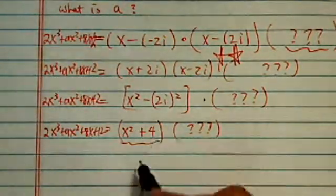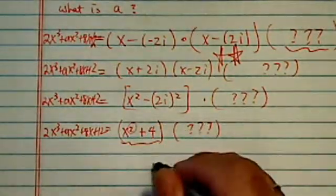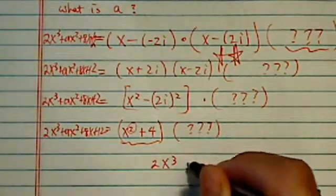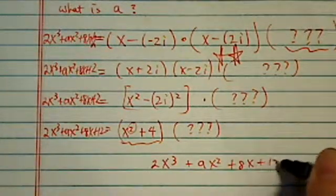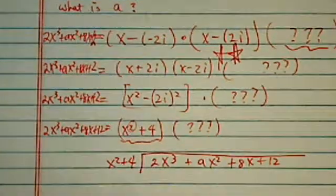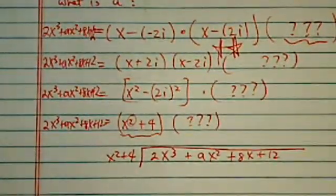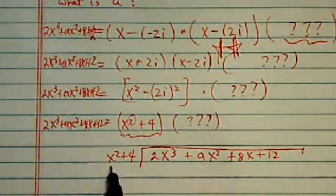So let's set it up: 2x³ + ax² + 8x + 12 divided by x² + 4. That's complicated. It's tedious, but it doesn't have to be hard.